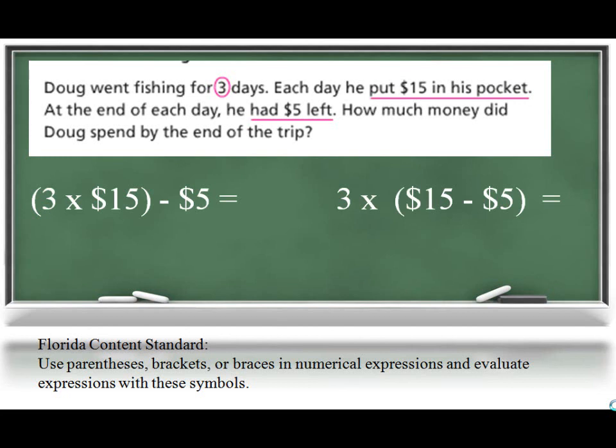So we need to group $15 minus $5 in parentheses to make sure that that part of the expression is clarified before multiplying it by 3 days. Students should be able to identify and explain why the first expression does not accurately describe the scenario.